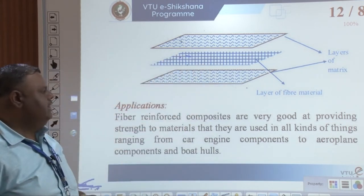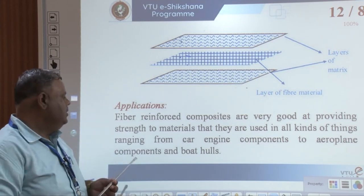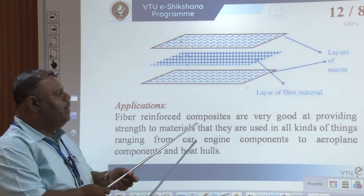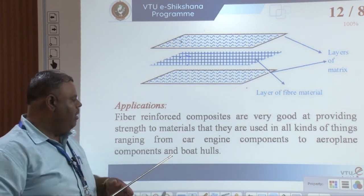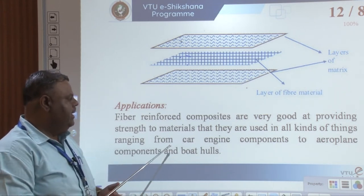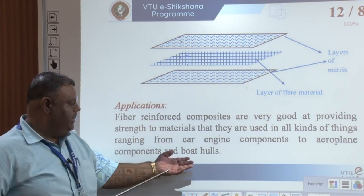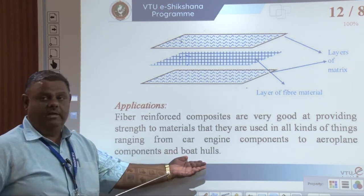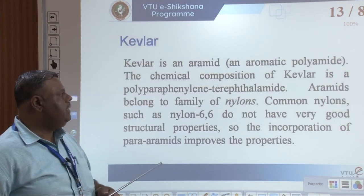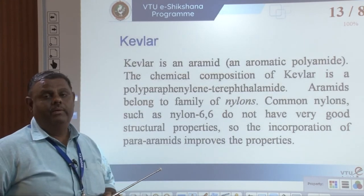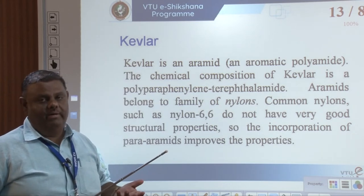The fiber-reinforced composites are very good at providing strength to materials, and they are used in all kinds of things ranging from car engine components to aeroplane components. They are very lightweight. One of the important applications is in making boat hulls, where these lightweight materials with good strength are used. Now, in the polymer composites made of matrix and fiber, this fiber is kevlar — let us try to understand what kevlar is.